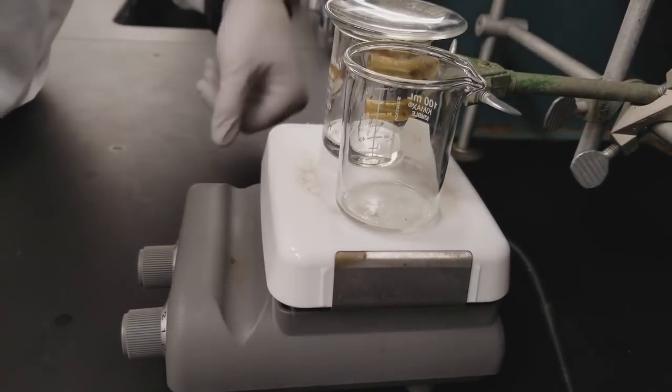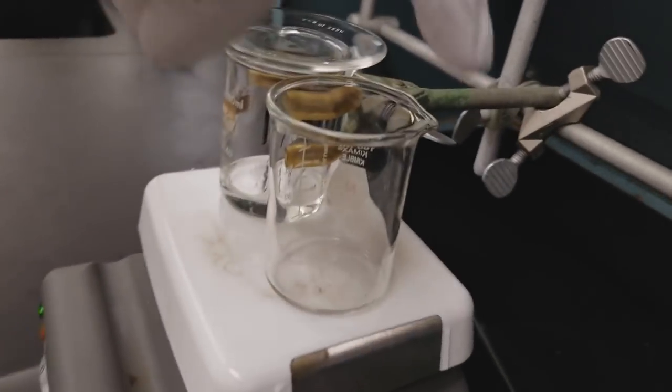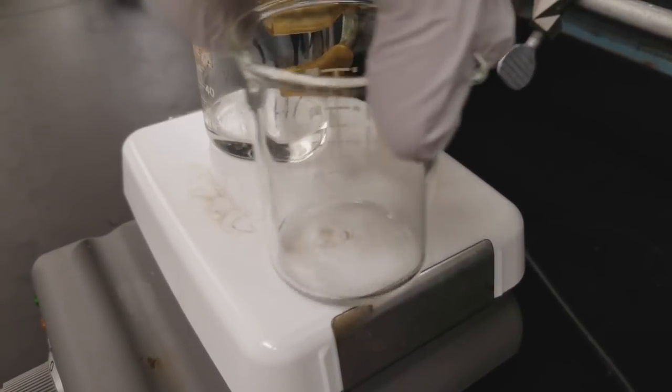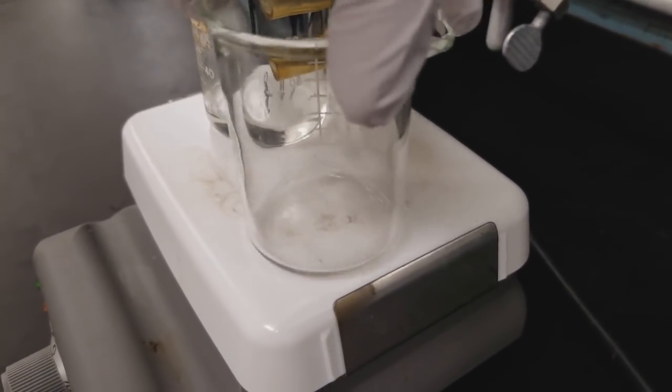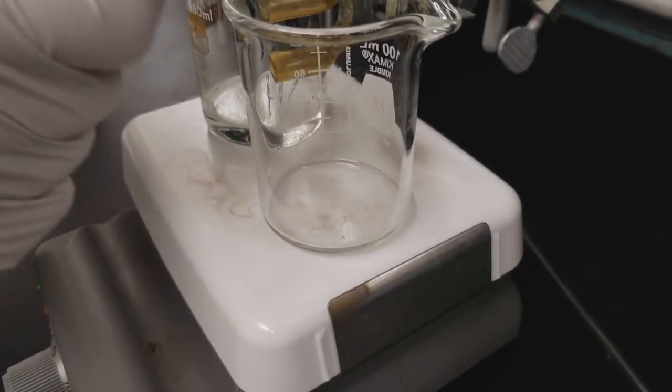And so once all the solid has dissolved, you are ready to begin the cooling process. So you can just remove your beaker from the hot plate and then you want to make sure that you turn the hot plate off so that you are not continuing to heat the solvent.